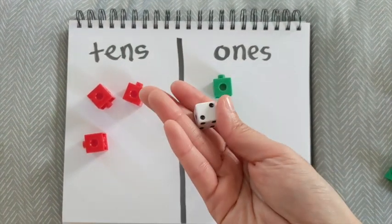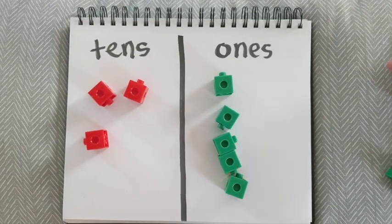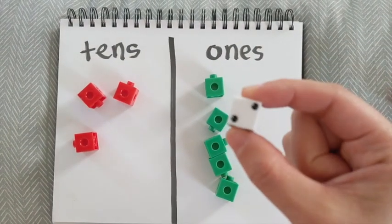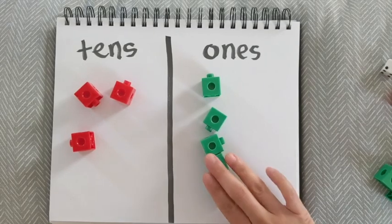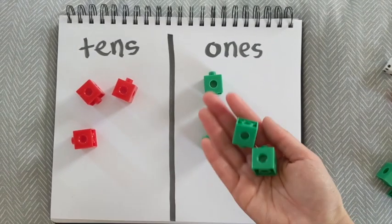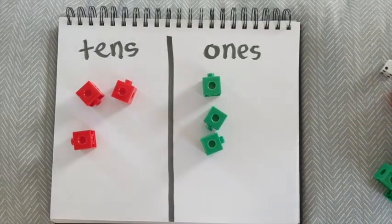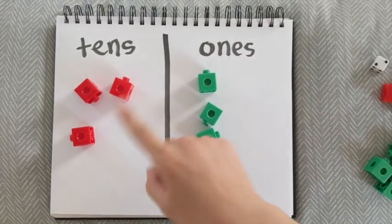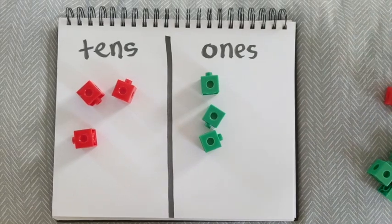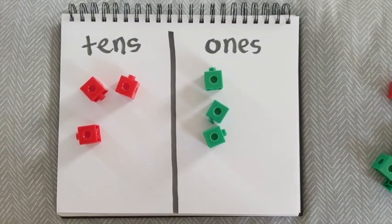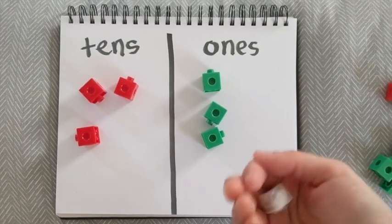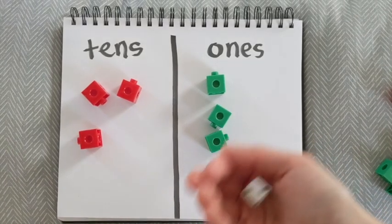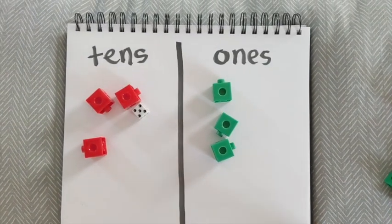I rolled again. I got a two. So I look in my ones place because these are two ones. And I do have enough. I have enough to take away two. So here are my two. I'm going to take it away. And now I have thirty-three left. I'm racing to zero though. So I don't have zero yet. I have thirty-three.